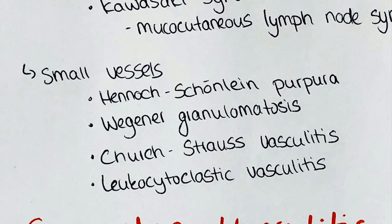The last type is leukocytoclastic vasculitis. It describes the damage of small blood vessels by leukocytes. The exact etiology is unknown but is thought to have some association with immune complexes and autoantibodies. In microscopic examinations, infiltration of arterioles and venules with neutrophilic granulocytes can be seen, leading to the development of fibrinoid necrosis.